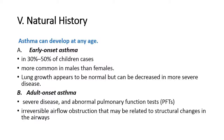B. Adult onset asthma is associated with severe disease and abnormal pulmonary function tests (PFTs). There may be irreversible airflow obstruction that is related to structural changes in the airways.